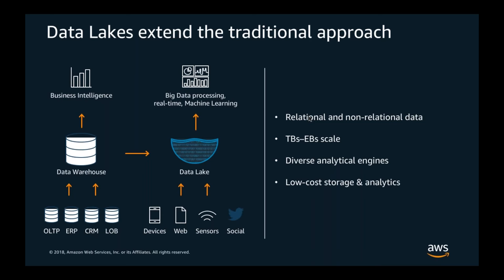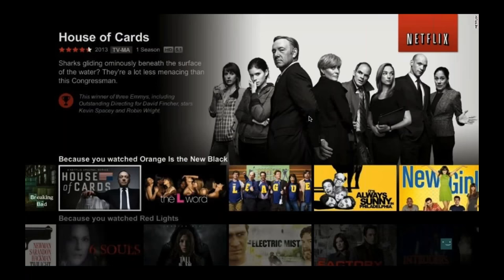Compared to the traditional model, the data lake helps you collect both relational and non-relational data, and can scale all the way to exabytes. A key difference is that this model allows you to use diversified analytical engines — you're no longer restricted to a single data warehouse. You can use multiple analytical engines depending on the workload, keeping costs low from both a storage and analysis perspective.